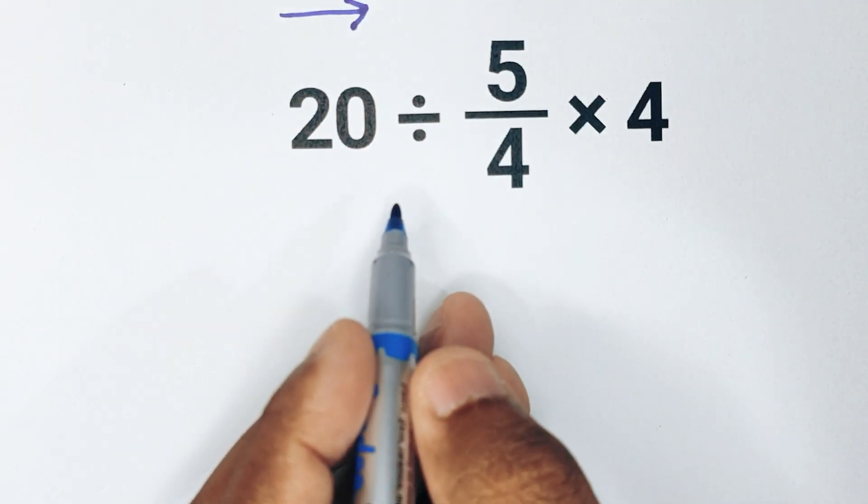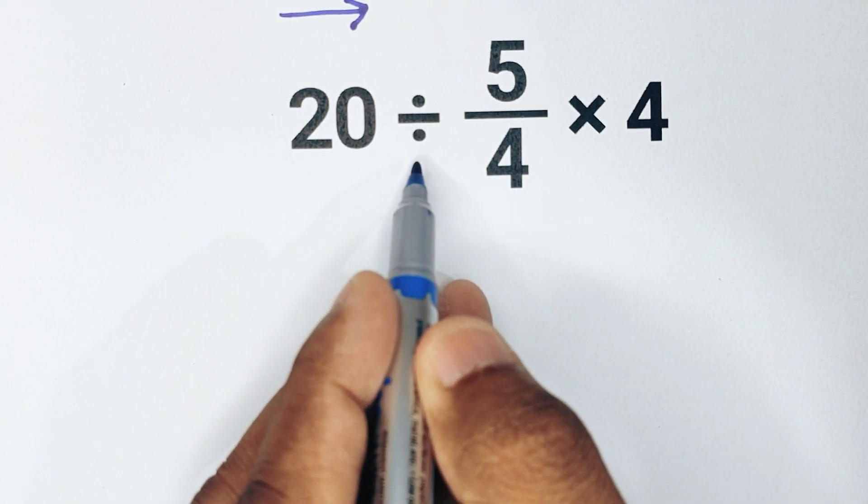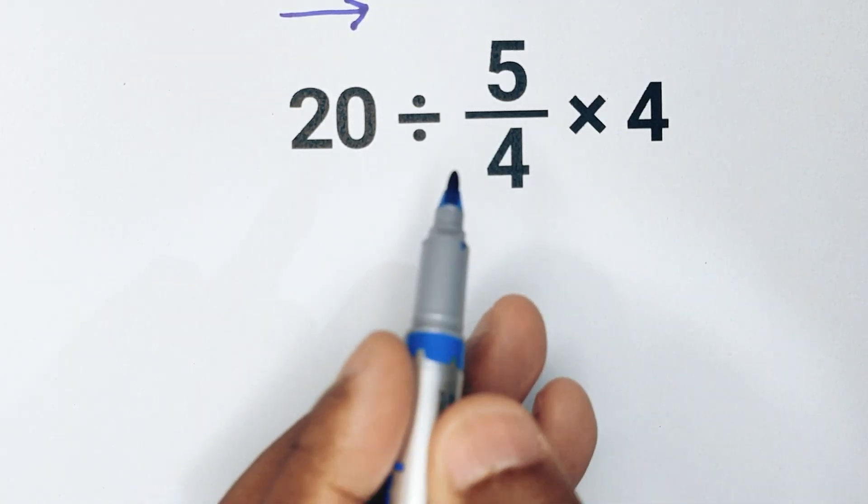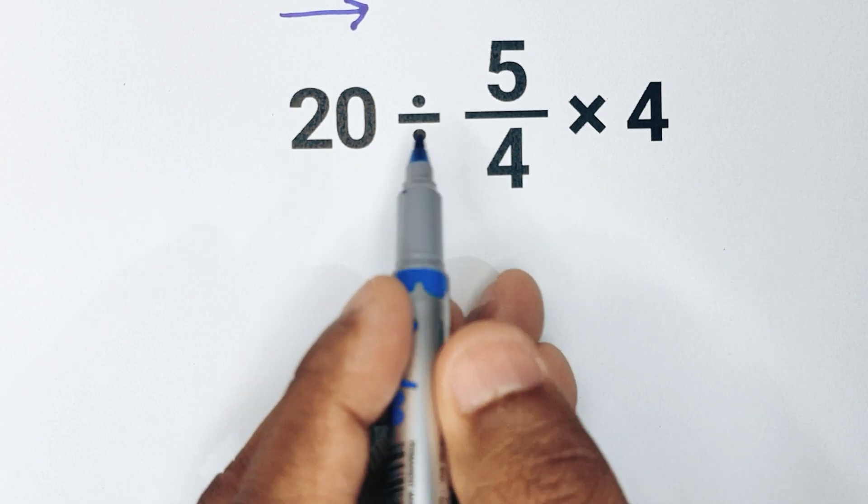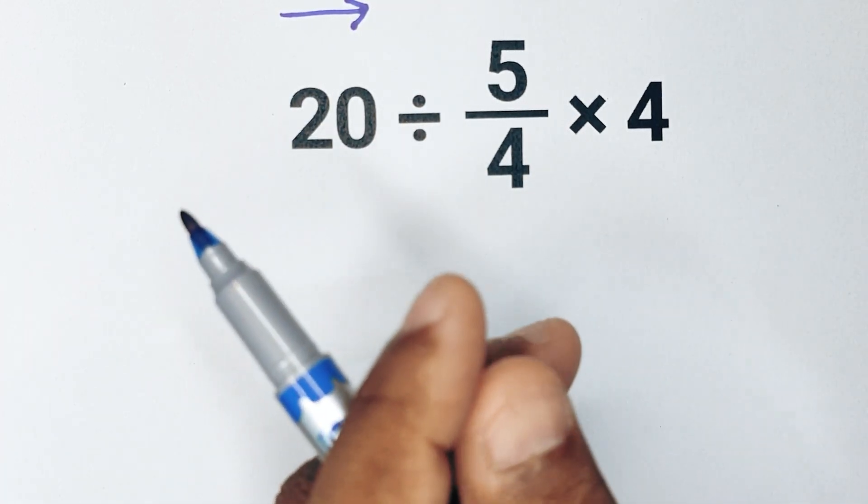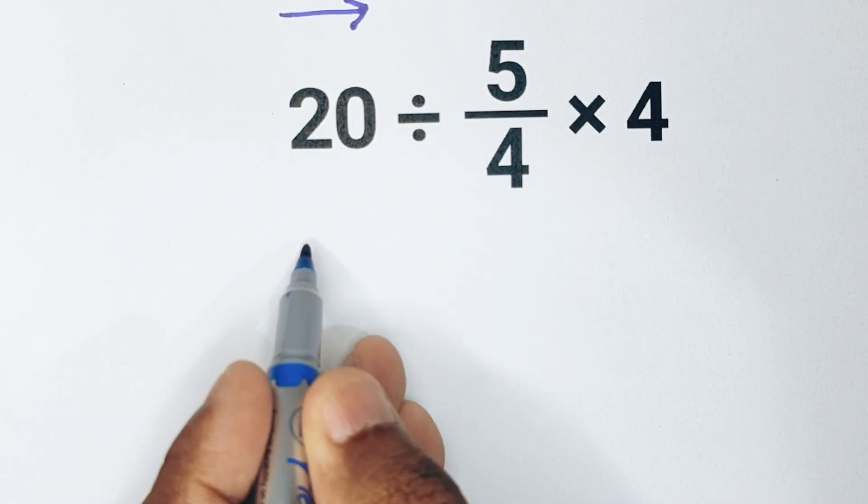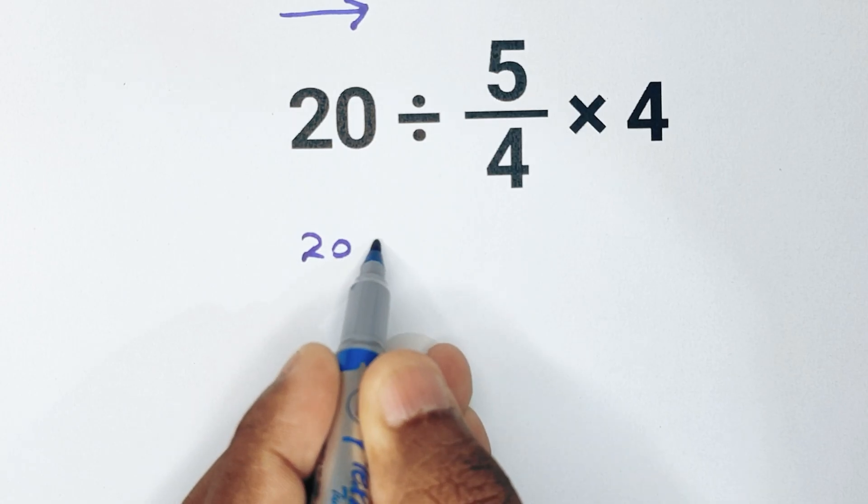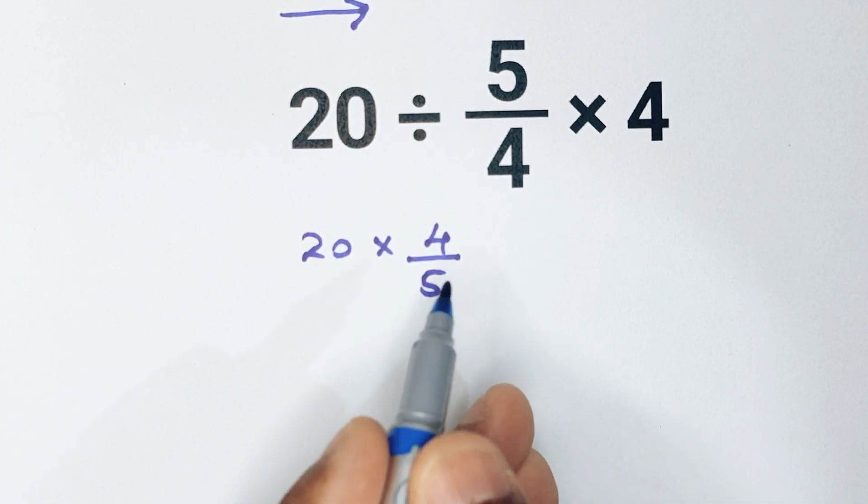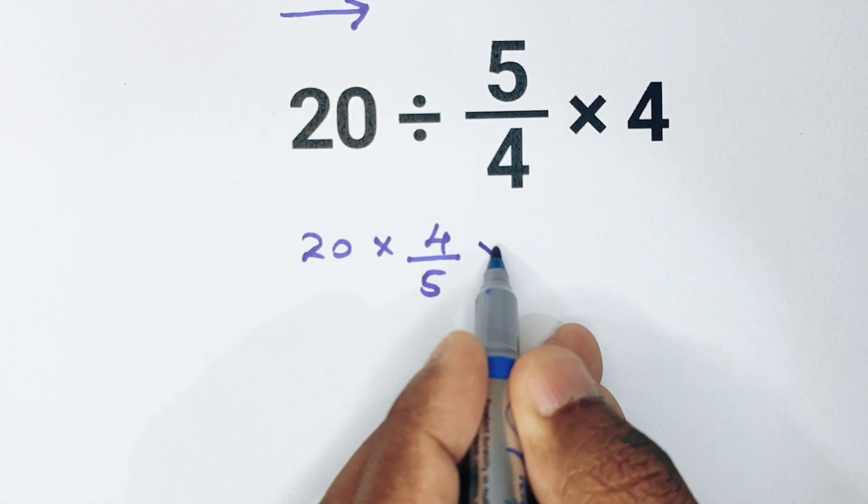So first we do the division. That means we start with 20 divided by 5 over 4. Now dividing by a fraction is the same as multiplying by its reciprocal. That means we flip the fraction upside down, so 20 divided by 5 over 4 becomes 20 multiply 4 over 5, and then we still have to multiply by 4.